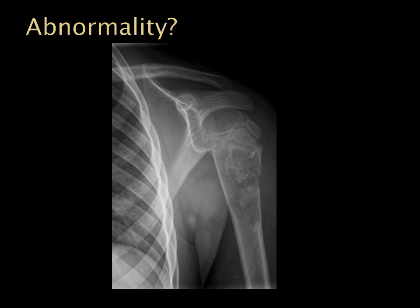The abnormality in the proximal humerus here is a fracture, but there's also a lytic or mixed-density lesion within the proximal humerus. This is actually a unicameral bone cyst — a fairly common appearance and location for bone cysts, which have a propensity to fracture.